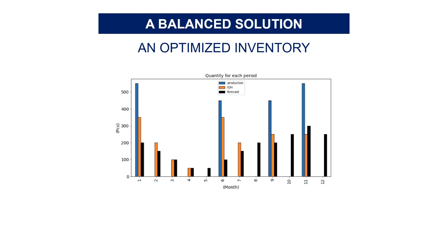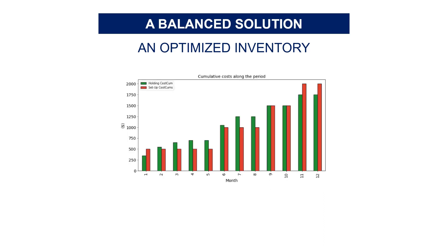In terms of inventory optimization, in this chart you can see that the inventory on hand (IOH) is very close to the demand forecast. This shows the power of the algorithm to optimize — you are not overstocking, and you have a great balance between inventory and setup cost. In the chart below, you can follow the cumulative holding and setup cost over the 12 months, and see clearly how the algorithm makes the balance between inventory and reducing setup cost.